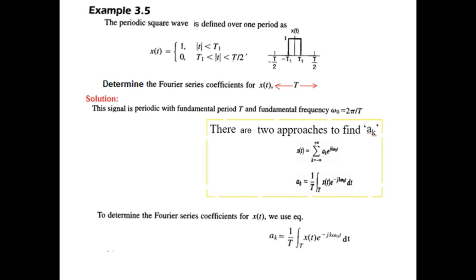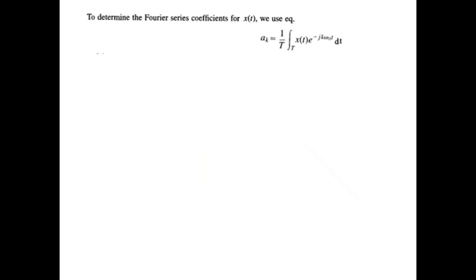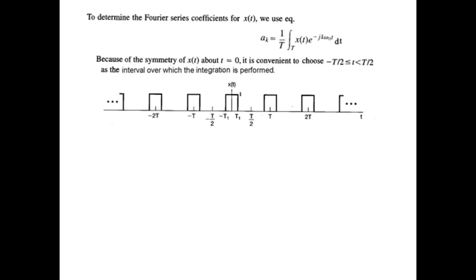So aₖ = (1/T)∫x(t)e^(-jkω₀t)dt, where T is the time period. We are using this formula to determine the coefficient, and this is the complete picture of the periodic function. The time period is from -T/2 to T/2, so these are the limits we will select, and the magnitude is 1.